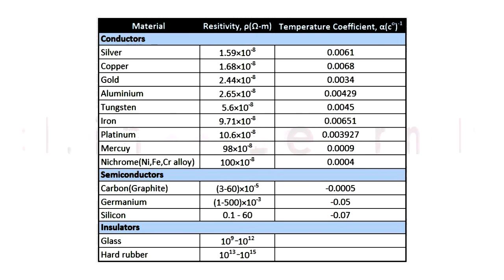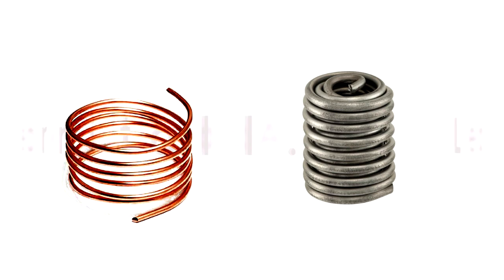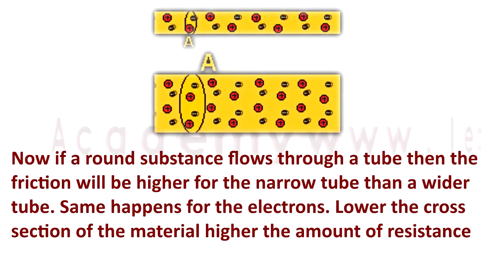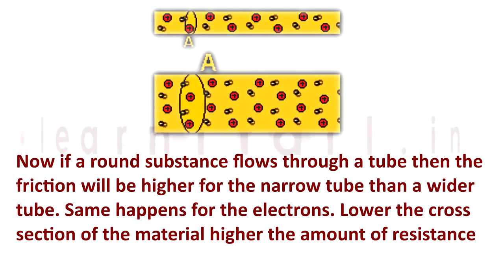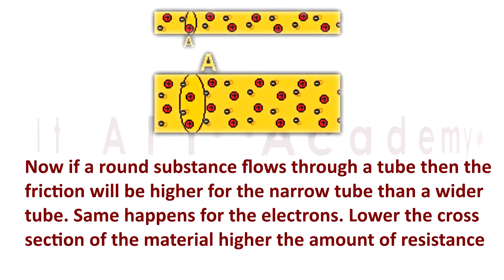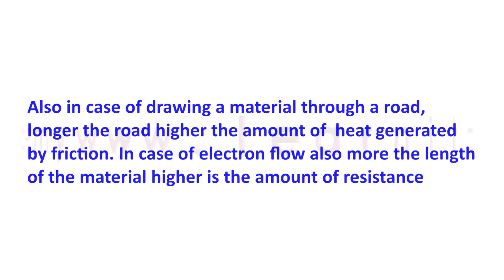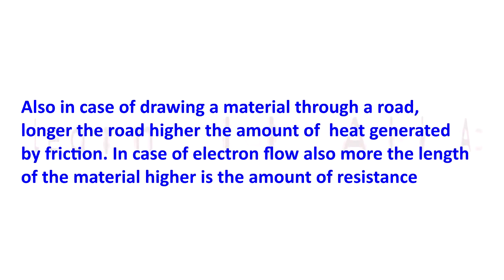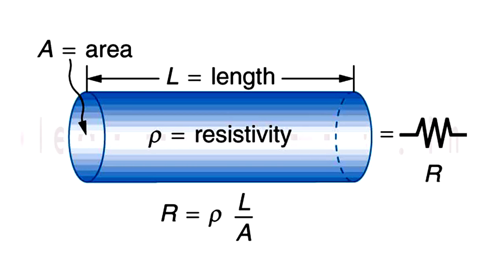The resistivity of copper is 1.68 to 1.72, and the resistivity of lead is 22. So for the same amount of electrical current while flowing through both materials, the lead will heat up more than the copper. Now if a substance flows through a tube, then the friction will be higher for the narrow tube than a wider tube. Same happens for the electron. Lower the cross section of the material, higher the amount of resistance. Also, longer the material, higher the amount of heat generated by friction. So now you can understand that the resistance of a material depends upon the length, cross sectional area, and the resistivity of the material.